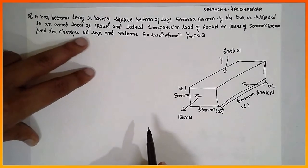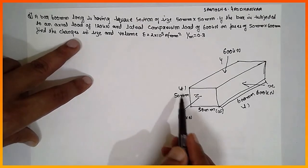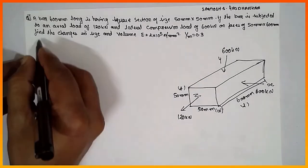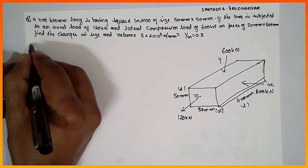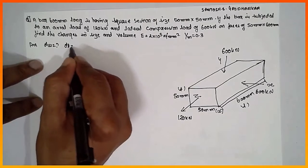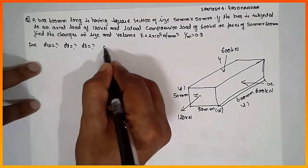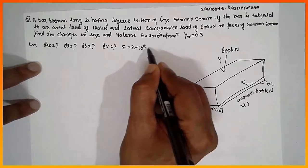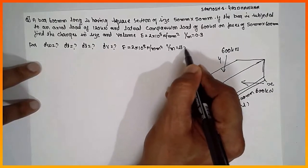Find the change in size — that means we have to find delta T, delta W, delta L, and delta V. Given data: E = 2×10⁵ Newton per mm square, and 1/m (mu) = 0.3.